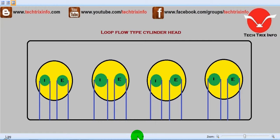Depending upon the valves and the port layouts, these cylinder head classifications are made. Let's see the loop flow type as you can see on the screen. This is a four cylinder engine. The yellow colored markings show the four cylinders.